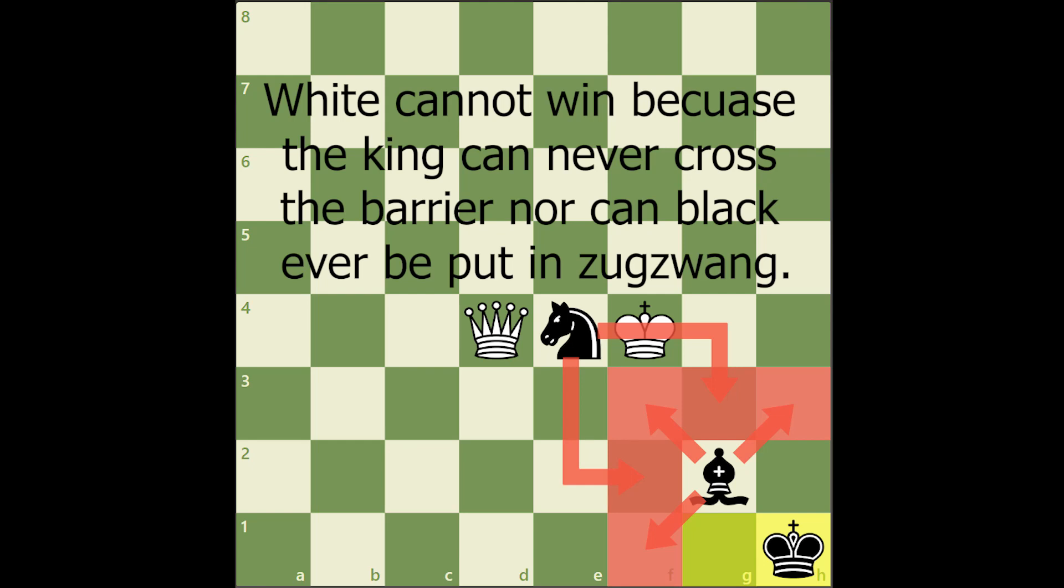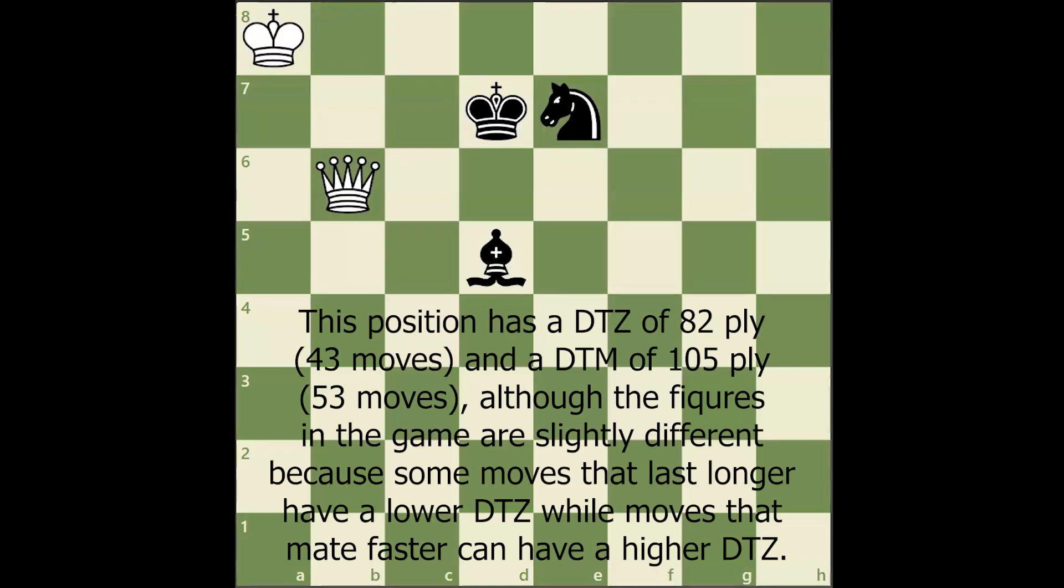Unless the knight and bishop can set up a fortress, this endgame is generally a relatively easy win for the queen. We will be looking at the following position where the checkmate is the longest.